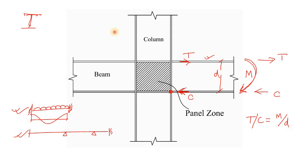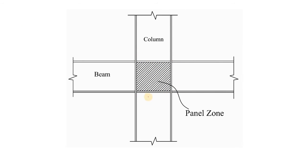Now let's find out why the doubler plate is required. Again consider this picture: due to the moment, there is tension at one flange and compression at the other. Redrawing this zone, you can see a force acting in one direction and another force acting in the opposite direction — this is nothing but a shear force. Think of it like a block on a frictional bed: if you apply a lateral load, the block is under shear action.